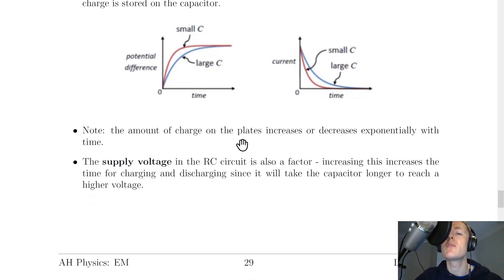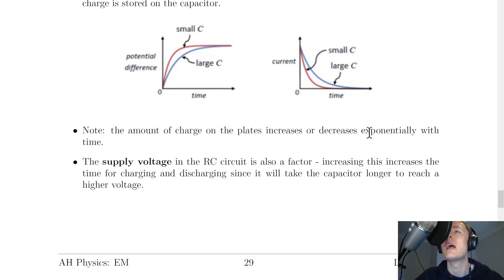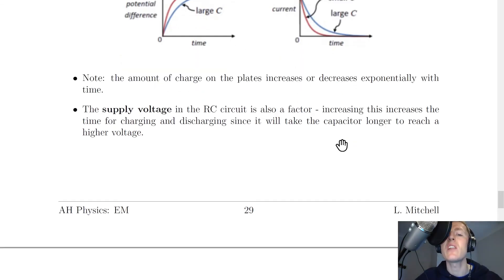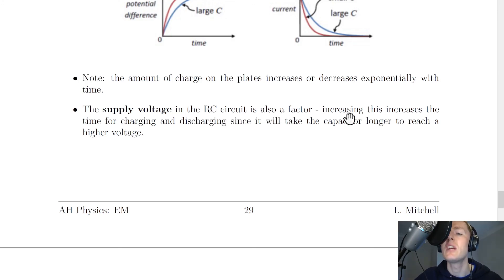The amount of charge on the plates increases or decreases exponentially with time, so all of these curves are exponential curves. The third factor affecting charging and discharging time is the supply voltage in the RC circuit. Increasing the supply voltage increases the charging and discharging time since it will take the capacitor longer to reach a higher voltage.